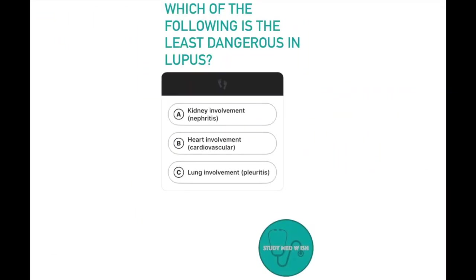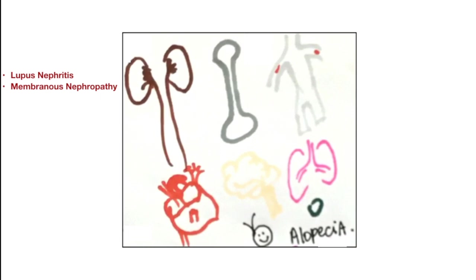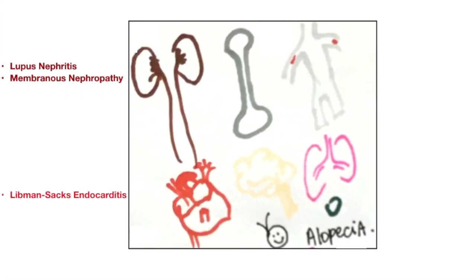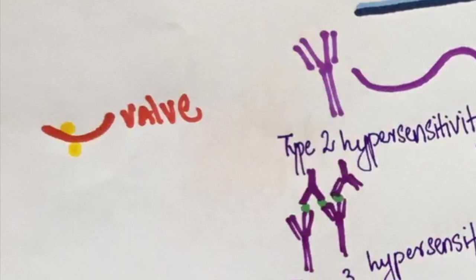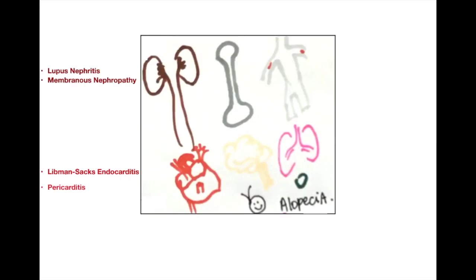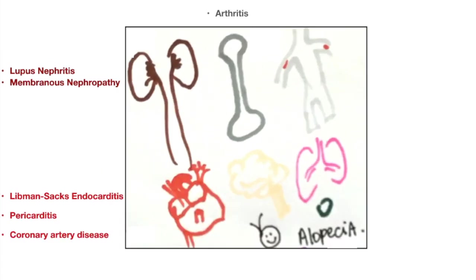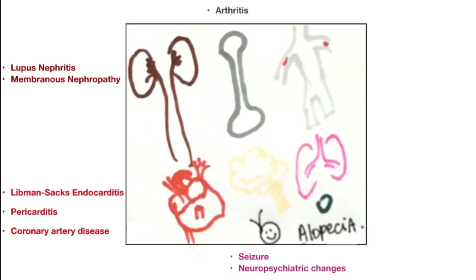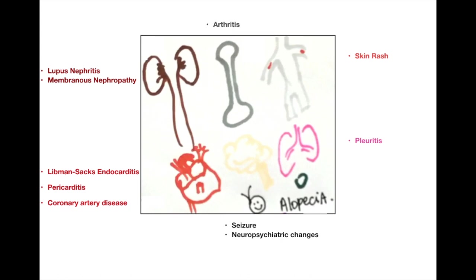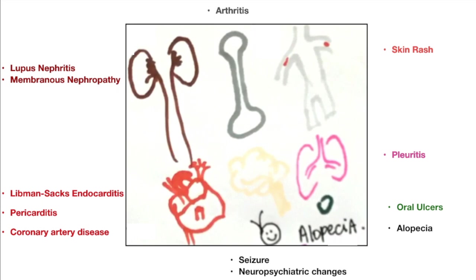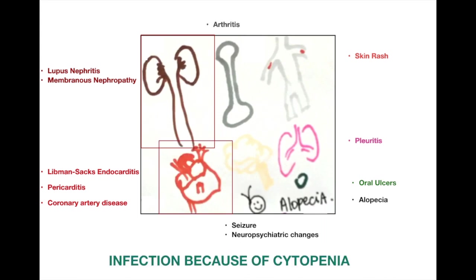Question number two: Which of the following is the least dangerous in lupus? Option A kidney involvement, option B heart involvement, option C lung involvement. Lupus can cause nephritis and membranous nephropathy in the kidney. In the heart, there could be Libman-Sacks endocarditis — this is unique as vegetations can be seen on either side of the heart valves. Pericarditis and atherosclerosis can also be seen. Arthritis is also a feature of lupus, as are CNS effects including seizures and neuropsychiatric changes, skin rash, pleuritis, hair loss, and oral ulcers. The major causes of death in lupus are kidney involvement, cardiovascular involvement, and infections. So the least dangerous among the options is lung involvement.